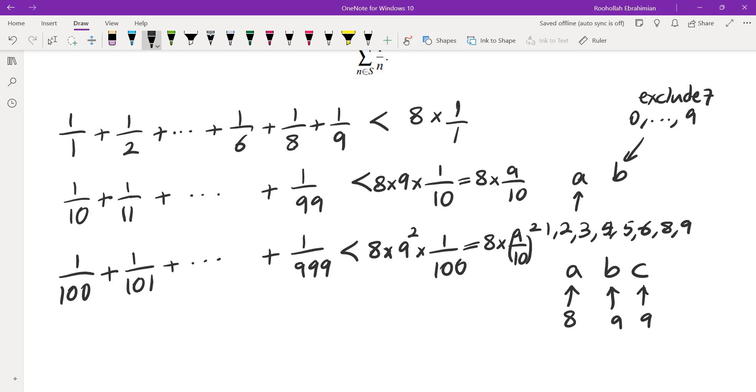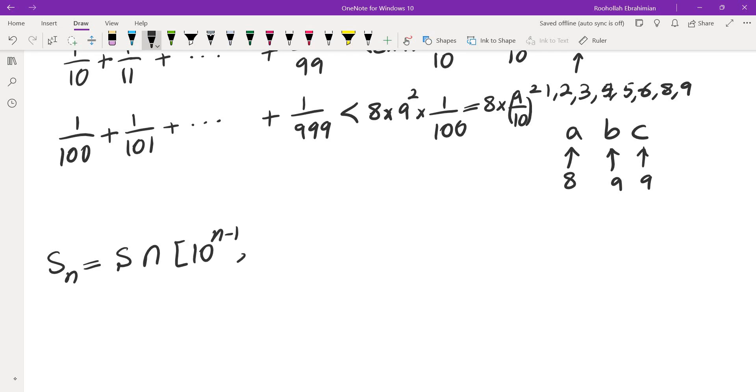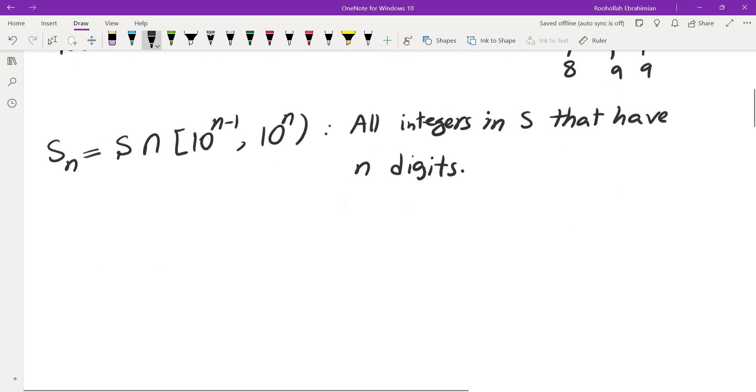So in general, let's say S_N is the intersection of S and the numbers between 10 to the power of N minus 1 and 10 to the power of N. So what is that? It means all integers in S that have N digits.